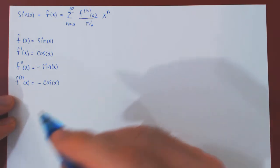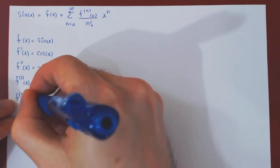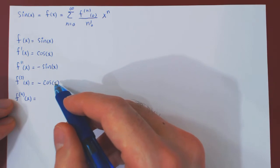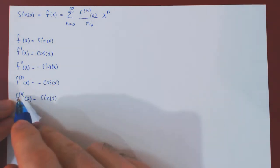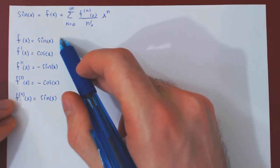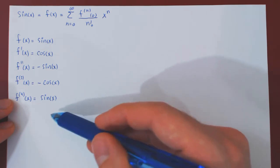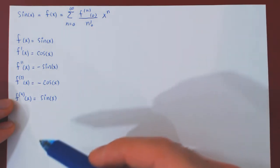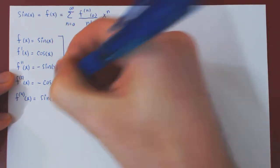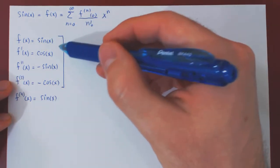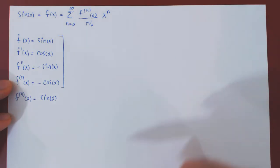The fourth derivative brings us right back to the 0th derivative — the function itself, sine of x. Because of this, the pattern repeats forever: sine, cosine, negative sine, negative cosine, and right back to sine. So we have a four-cycle for the higher derivatives of sine of x.